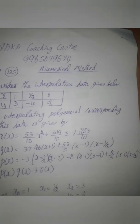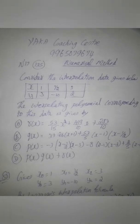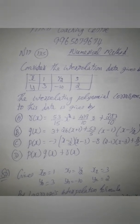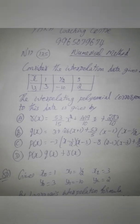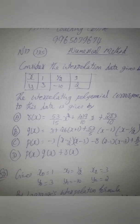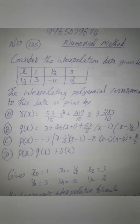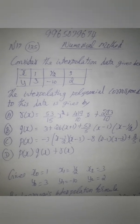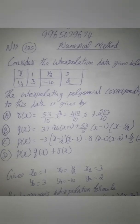The interpolating polynomial corresponding to this data is given by. I have 4 options. R of x equals one x squared x constant. Q of x equals 3 plus 26 bracket x plus 1, 53 by 5, x minus 1, x minus 1 by 2.